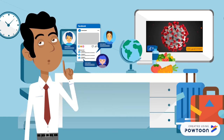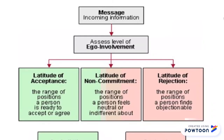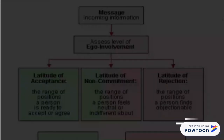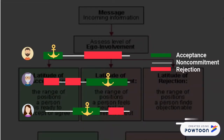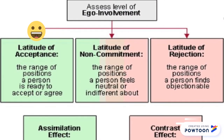People's attitudes towards specific issues are divided into three levels, and each person's attitude scale is different. Latitudes of acceptance indicates that people are accepting and agreeing to the message. Latitudes of rejection means disagreeing or rejecting the message. Latitudes of noncommitment means that the issue is not very relevant to the audience, or the audience doesn't have a specific opinion.